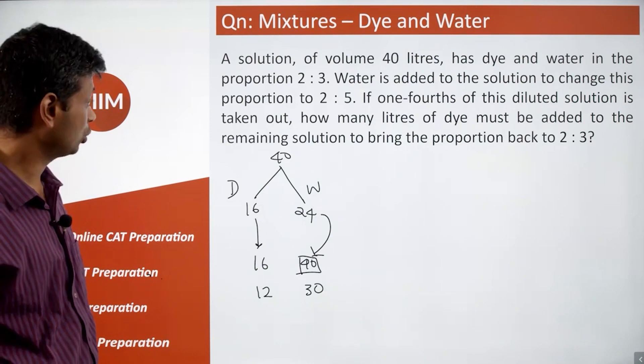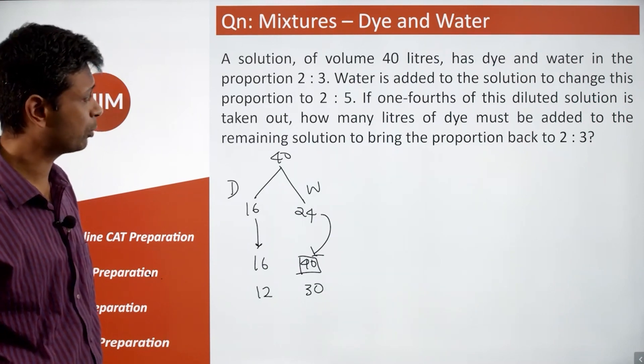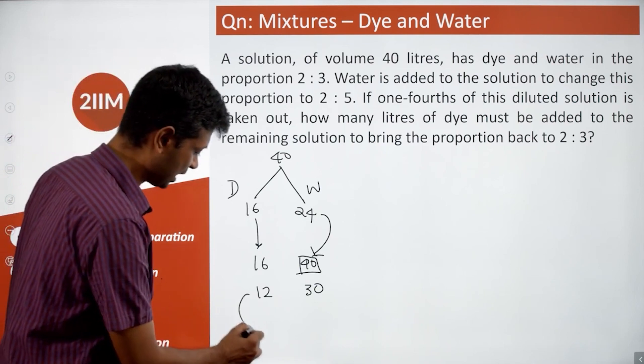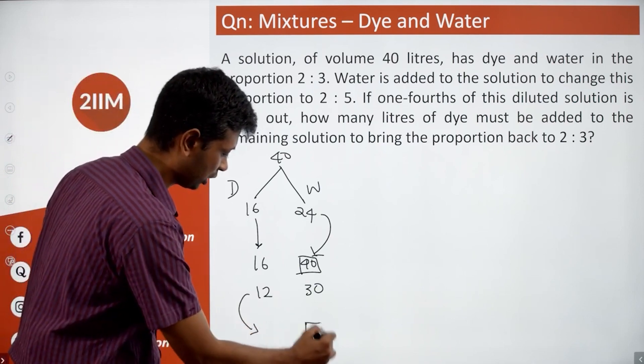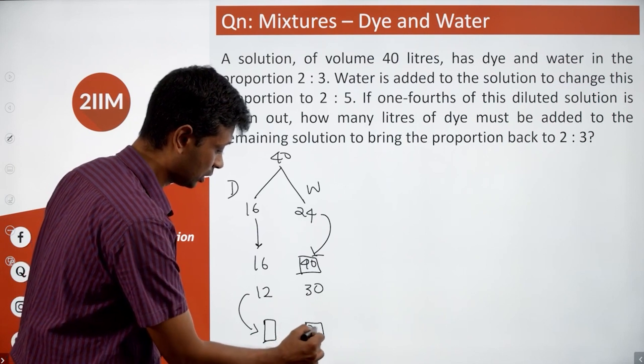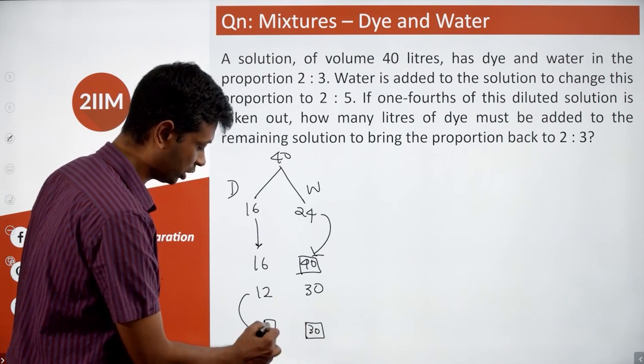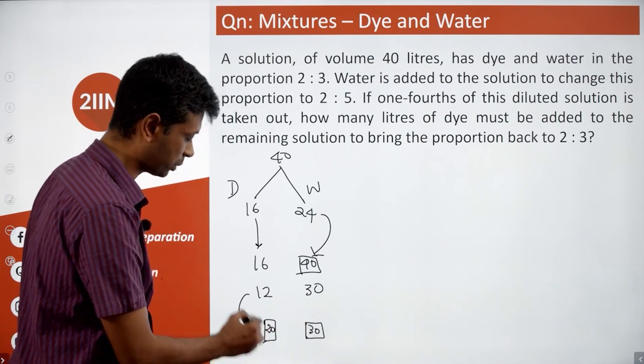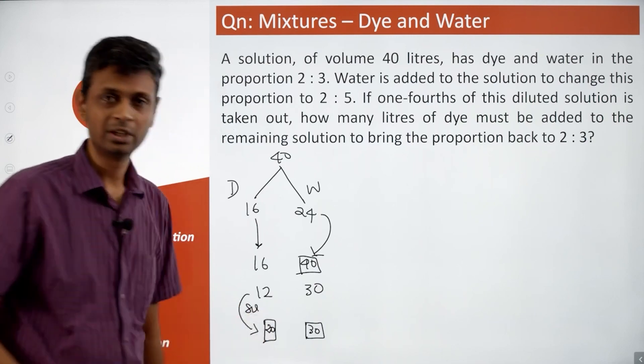Now, how many liters of dye must be added to the remaining solution to bring the proportion back to 2 is to 3? What should we add here so the ratio remains as 2 is to 3? This is going to stay as 30. This should be 20. We're adding 8 liters.